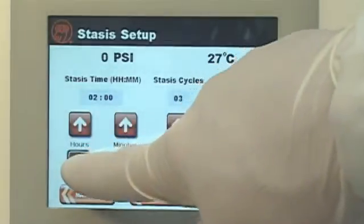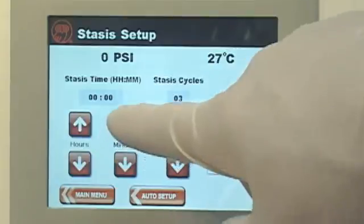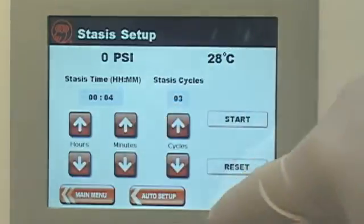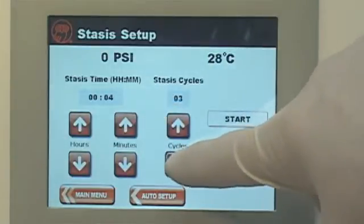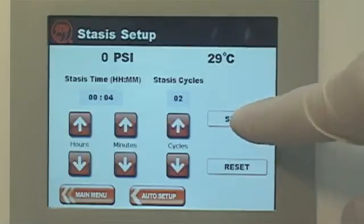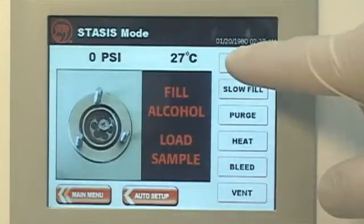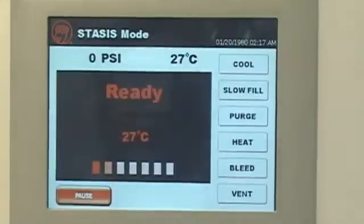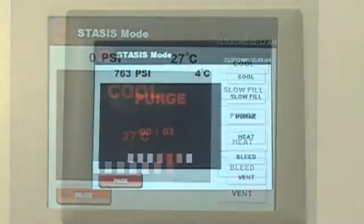At this point, the time in stasis can be selected, followed by the amount of times to cycle through the stasis mode. Now, the fully automatic process can be initiated. The system will cool, fill, and enter purge. Then enter the stasis phase.